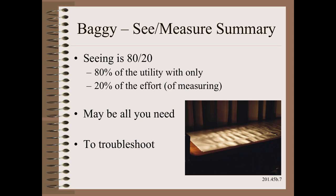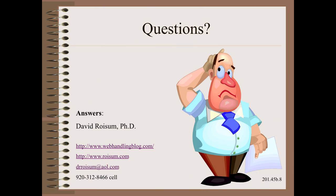Seeing is the 80-20 of baggy web troubleshooting. In other words, 80 percent of the utility with only 20 percent of the time and expense. It may be all you need to troubleshoot the root cause, as we will detail in the next dozen case histories. Thank you so very much for watching this module in my Plant Practical video series. Stay tuned for the next clip where we will discuss the most common root cause — but only if you promise not to jump to conclusions.